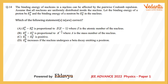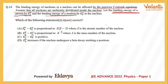The question says that the binding energy of nucleons in a nucleus can be affected by pairwise coulombic repulsion. Assume that all the nucleons are uniformly distributed inside the nucleus. Let the binding energy of a proton be B_EP and the binding energy of a neutron be B_EN.